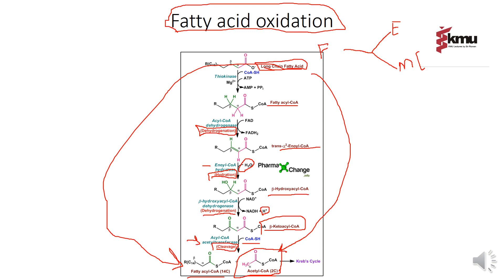There are two main concepts in fatty acid metabolism. First, energy is produced: acetyl-CoA enters the Krebs cycle and then the electron transport chain to produce ATP. Second, if it does not enter the Krebs cycle, the large molecules are converted into monomers or simple molecules of triglycerides, which help in forming various structural components in the human body.